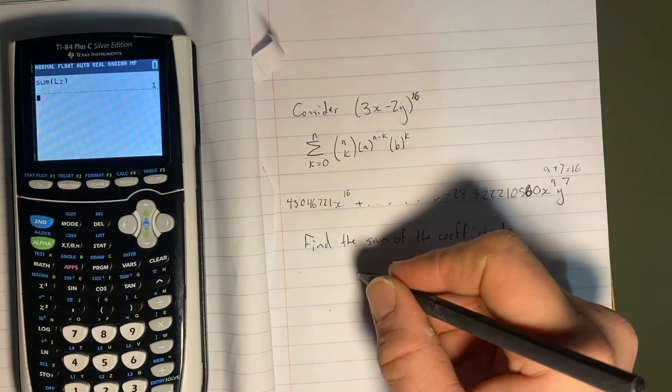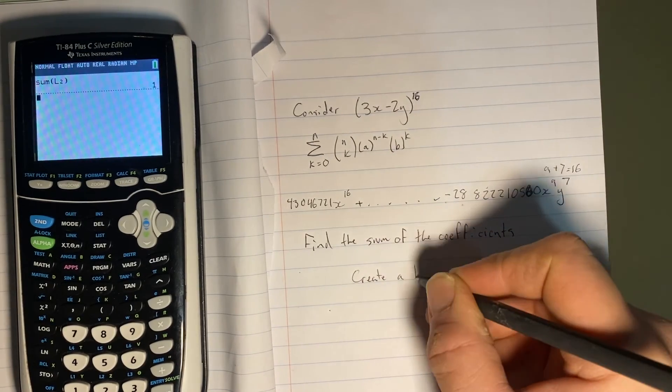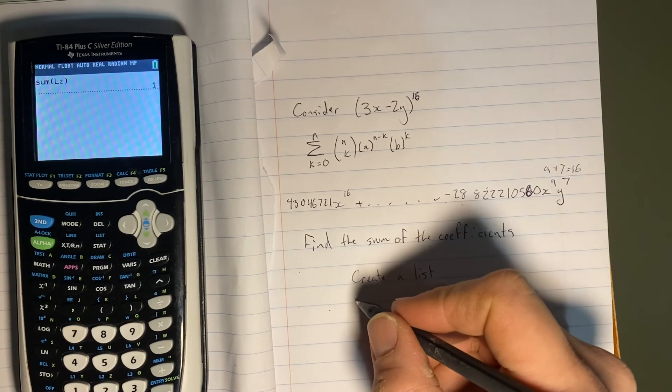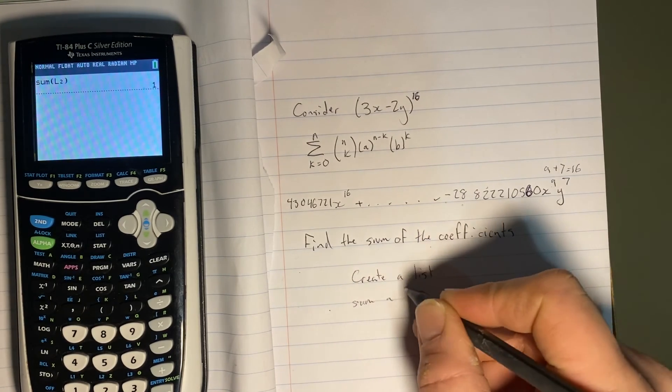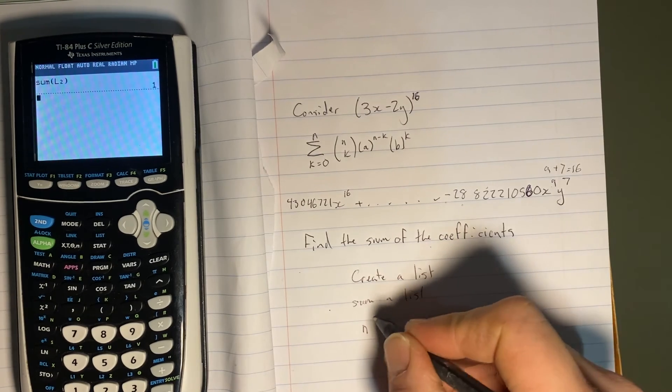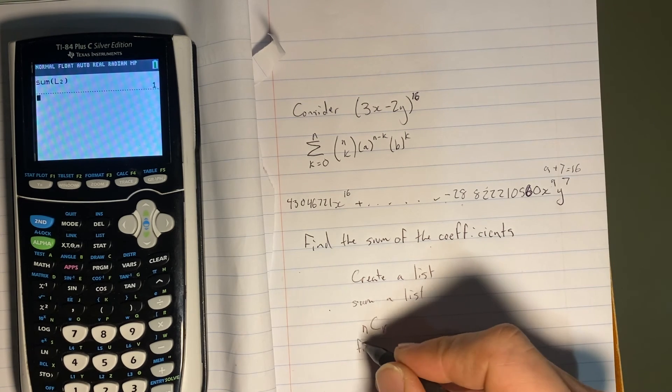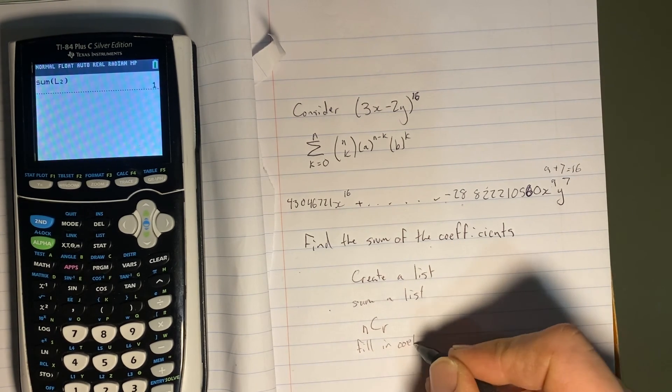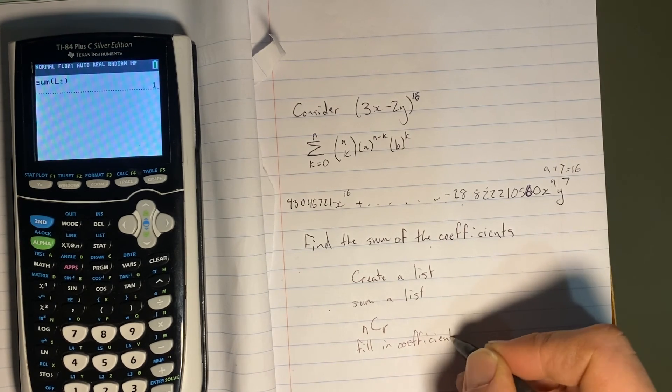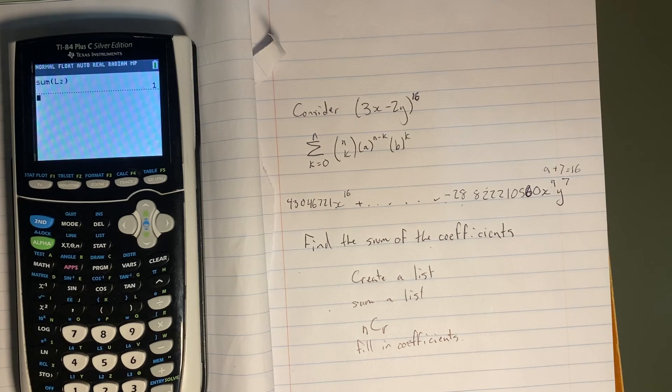So let's recall what we were able to do. We were able to create a list. We were able to sum a list. We found where the NCR function is in the calculator. And we were able to fill in coefficients. So I'd say that's a pretty good swing at some of our binomial expansion questions from here. Join us next time, and I will perhaps give some tips on calculator use for solving logarithmic equations. Don't forget to hit like and subscribe. Ring that notification bell. And as always, double check your signs on your calculations.